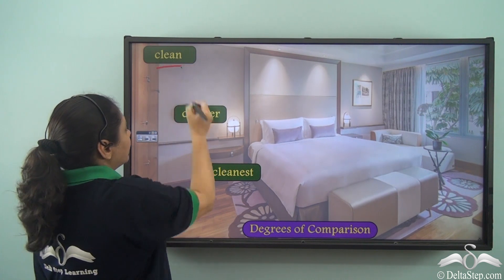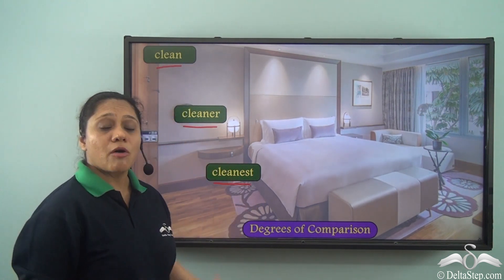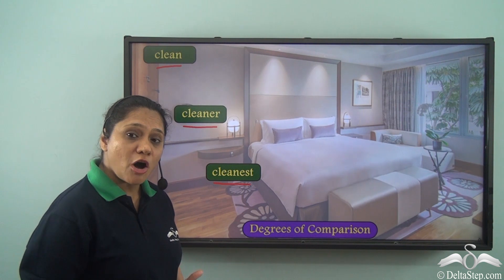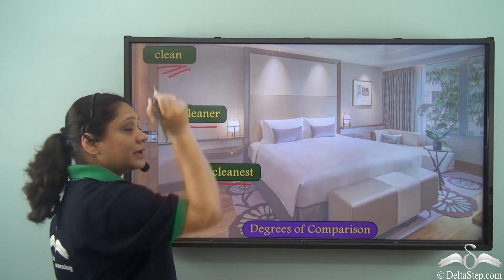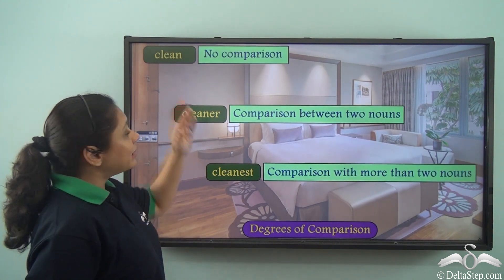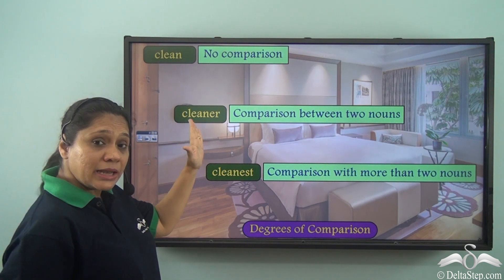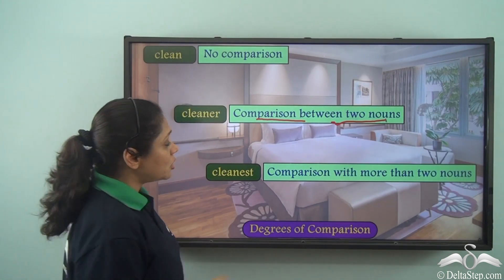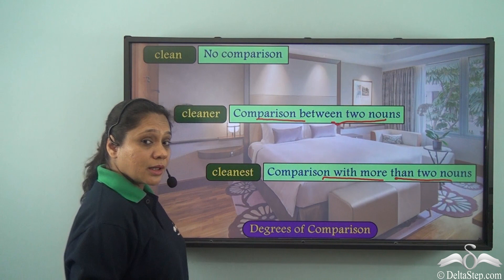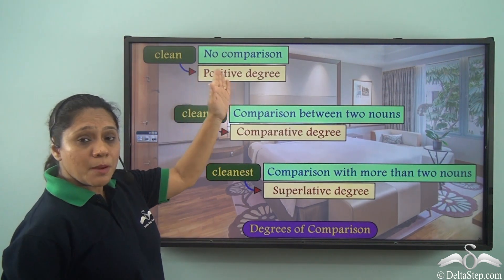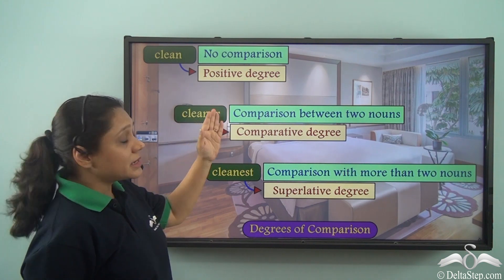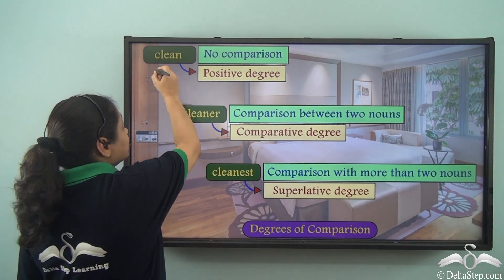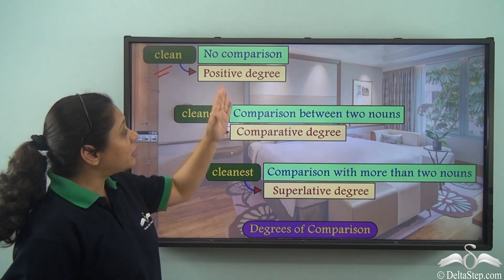Clean, cleaner, and cleanest are all three forms of adjectives which show us the degrees of comparison, and they have been formed from the adjective 'clean.' 'Clean' shows no comparison, 'cleaner' shows comparison between two nouns, and 'cleanest' shows comparison with more than two nouns. So 'clean' is in the positive degree, 'cleaner' is in the comparative degree, and 'cleanest' is in the superlative degree.